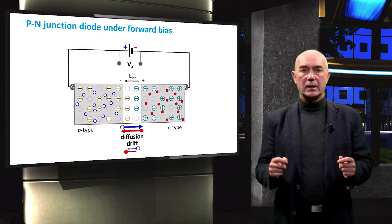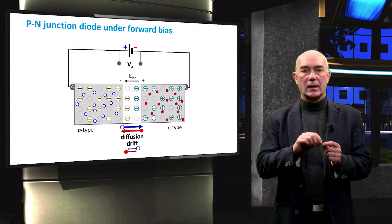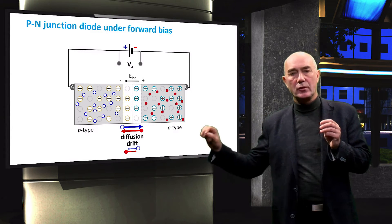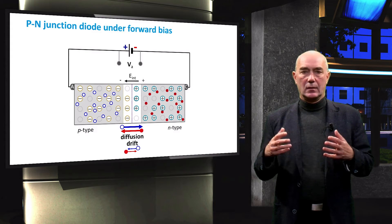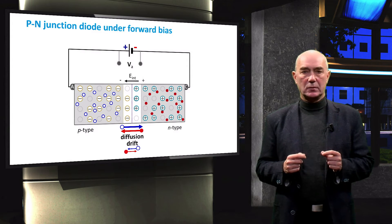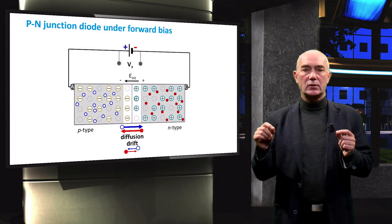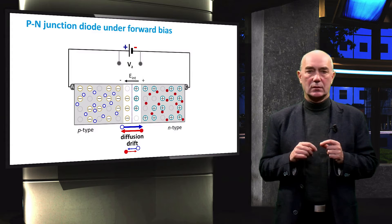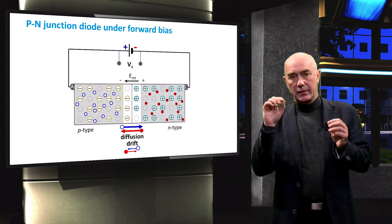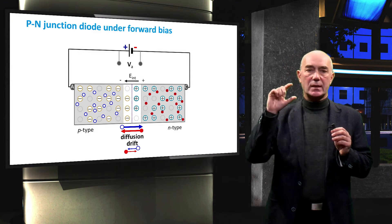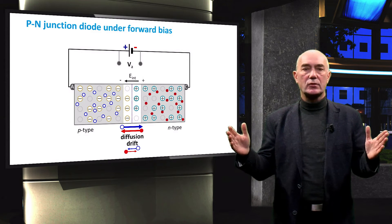At thermal equilibrium, the potential at the edge of the depletion region in the N-type semiconductor is positive with respect to the edge of the depletion region in the P-type semiconductor. When we apply a positive voltage on the anode with respect to the cathode, this voltage will be combined with the built-in voltage across the depletion region. The result is that the built-in voltage will be decreased by the size of the applied voltage, and the potential drop across the depletion region will be lowered.